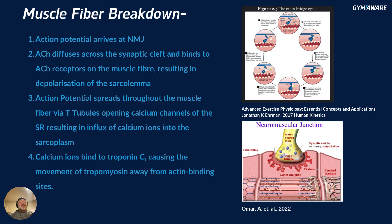That action potential allows acetylcholine to diffuse across the synaptic cleft and bind to acetylcholine receptors on the muscle fiber, resulting in depolarization of the sarcolemma. The action potential then spreads throughout the muscle fiber via T-tubules, opening calcium channels of the sarcoplasmic reticulum, causing an influx of calcium into the sarcoplasm. Calcium then binds to troponin C, causing movement of tropomyosin away from the actin binding sites — allowing myosin to grab actin.